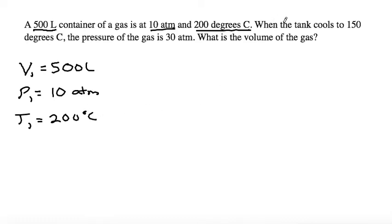Then it says the tank cools to 150 degrees C, so this is something that changes about its condition. So let's call that T2 is 150 degrees C, and at that temperature the pressure is 30 atmospheres. So that would be our P2. We're looking for what is the volume of the gas, so what we're looking for is V2.